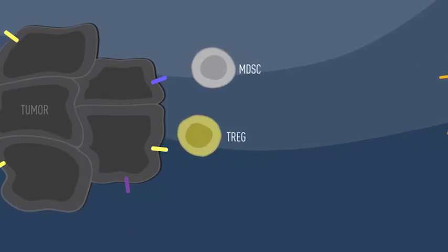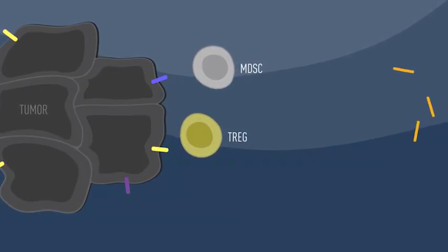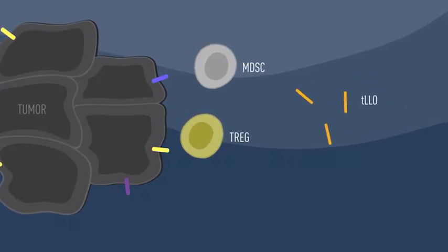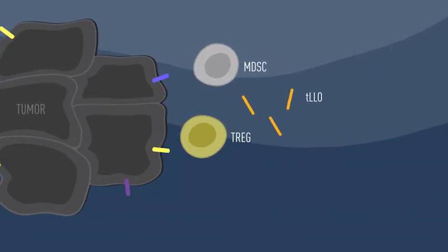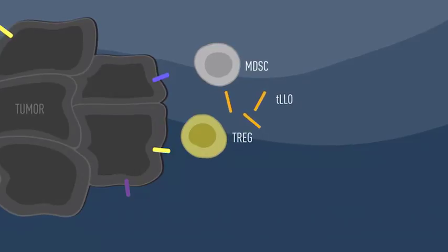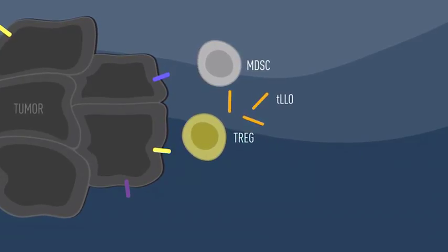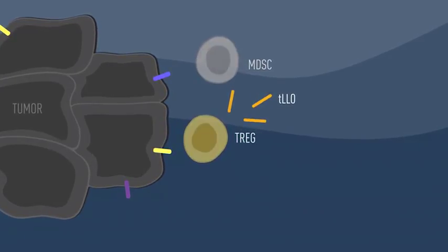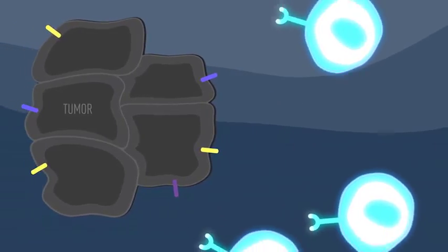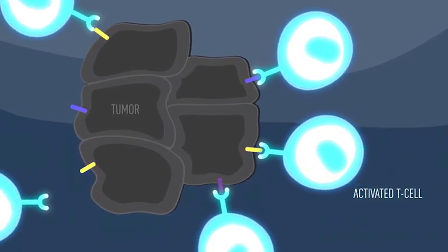MDSCs and Tregs may limit the effectiveness of the immune response. In addition to stimulating the immune response, the LM technology is designed to help ensure that the response remains at a high level. The TLLO generated from the recombinant plasmid triggers a reduction in the immune-suppressive activities of MDSCs and Tregs, and the immune response is sustained.